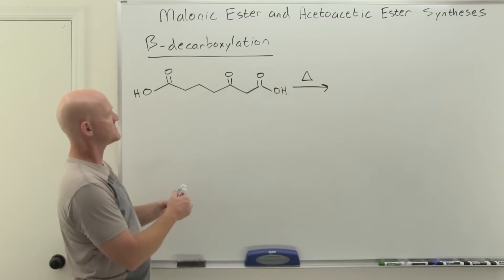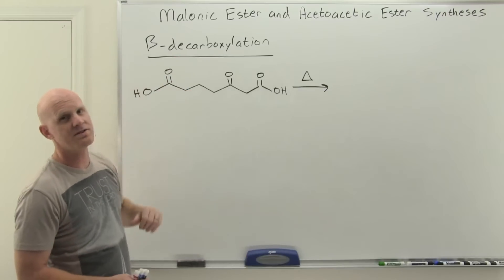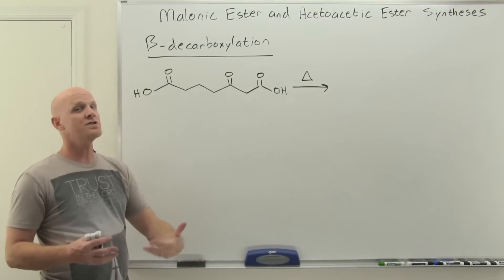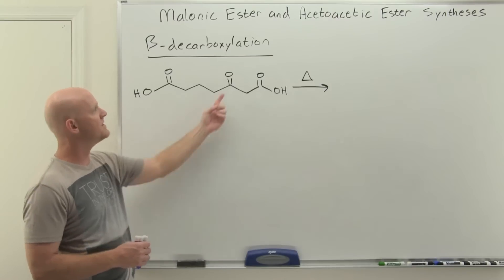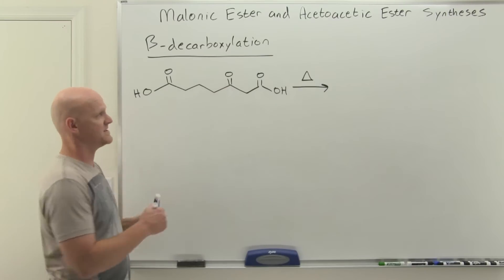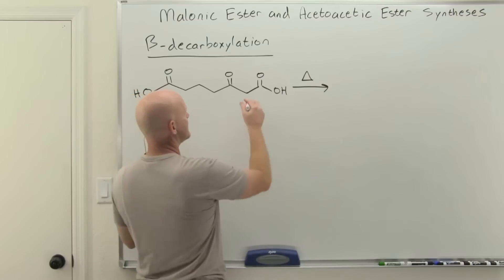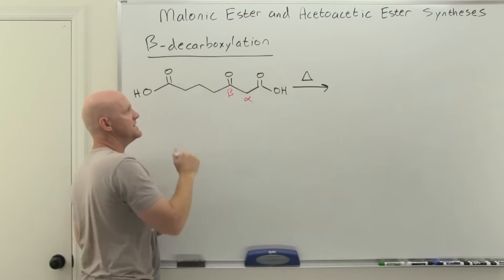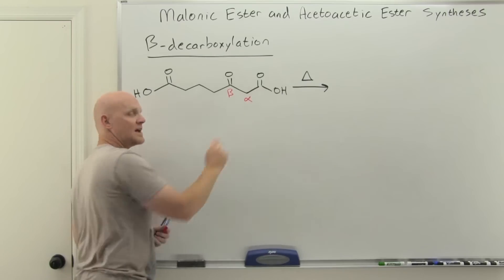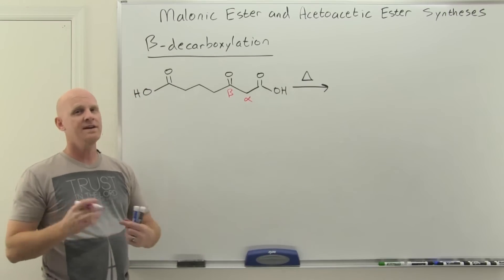Beta decarboxylation is the result of certain carboxylic acids being unstable, and they're unstable when you have another carbonyl at the beta position. If we look at this carboxylic acid here, there's its alpha carbon, there's its beta carbon, and there's a carbonyl there, and this is an unstable carboxylic acid when heat is applied.